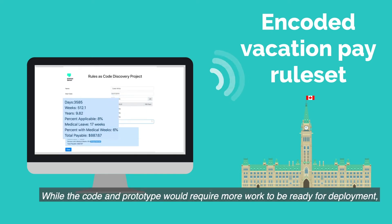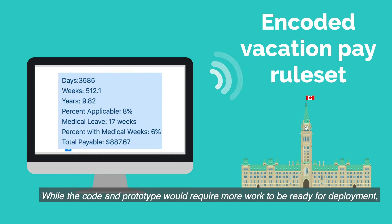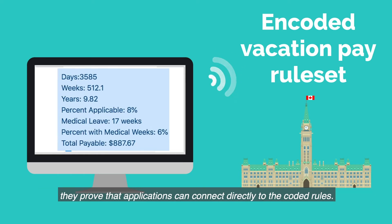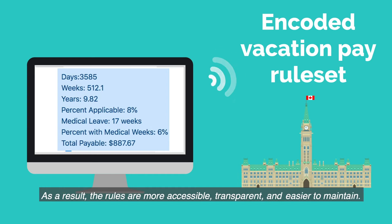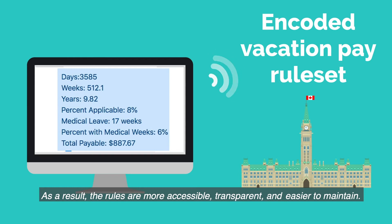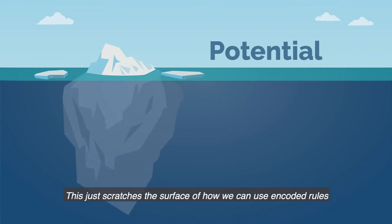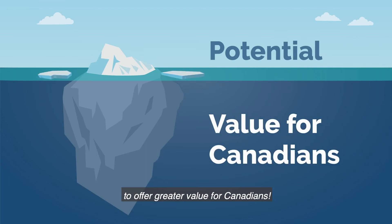While the code and prototype would require more work to be ready for deployment, they proved that applications can connect directly to the coded rules. As a result, the rules are more accessible, transparent, and easier to maintain. This just scratches the surface of how we can use encoded rules to offer greater value for Canadians.